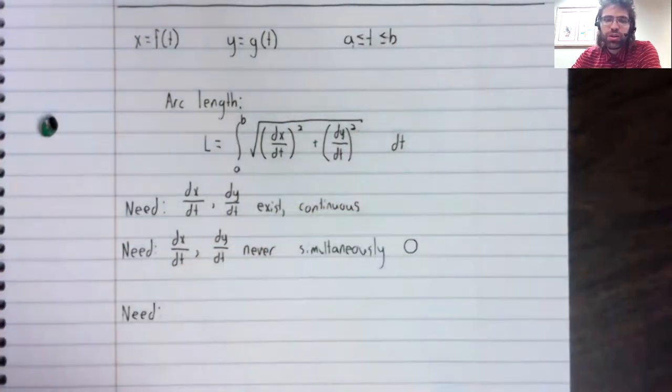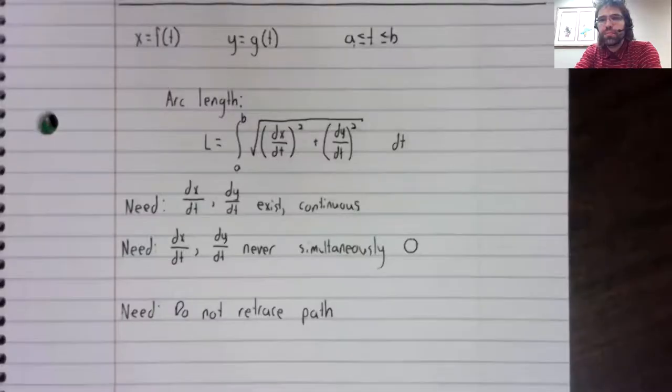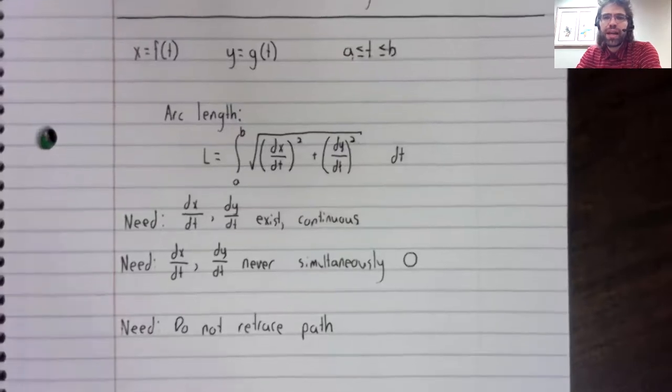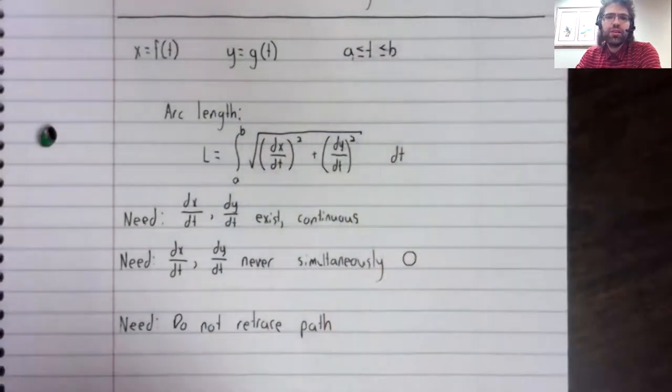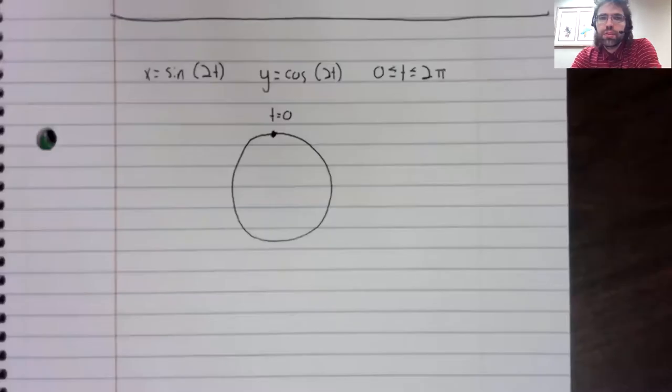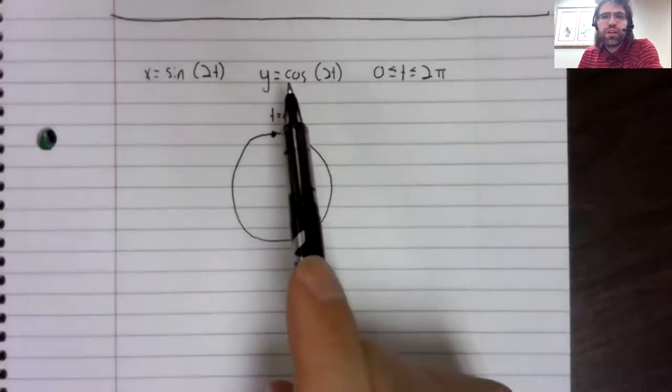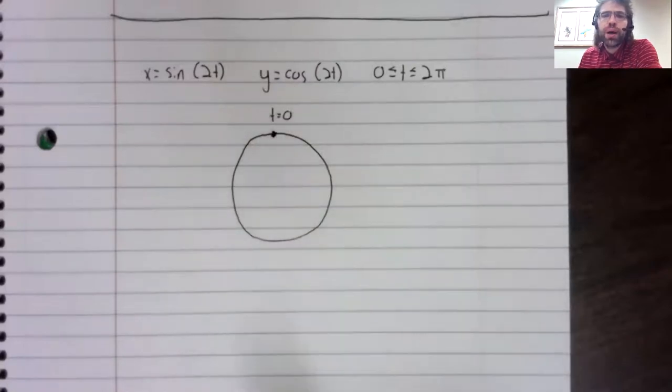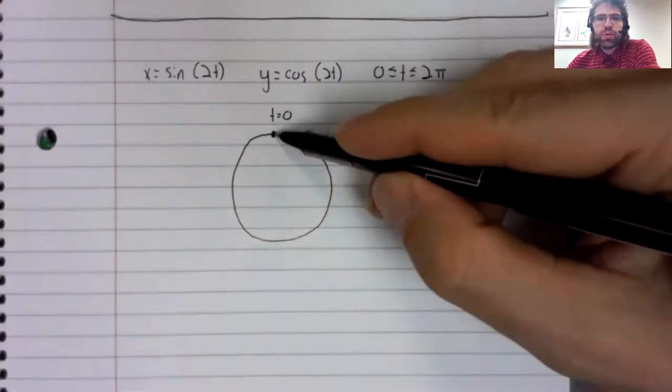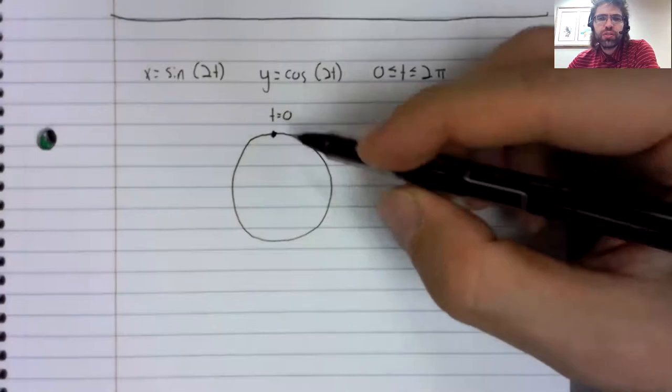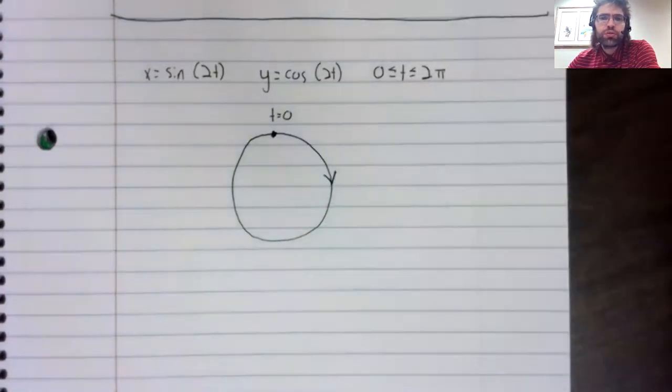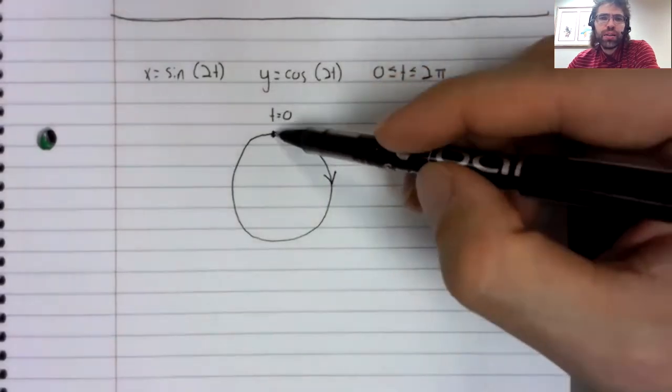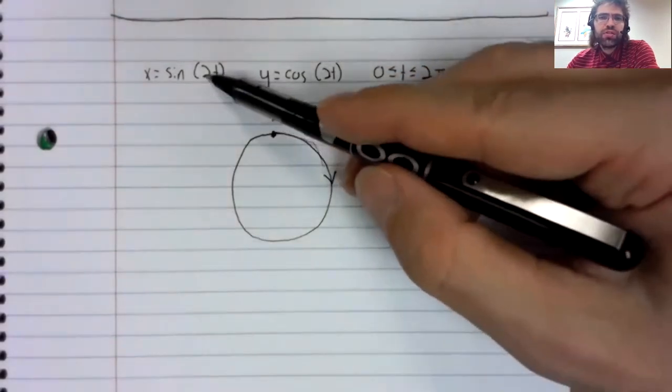Our third requirement is that we do not retrace our path from A to B. So consider sine of 2t equals x, the cosine of 2t equals y, from zero to two pi. When t equals zero, we're at the top of the unit circle, and we are traveling clockwise.